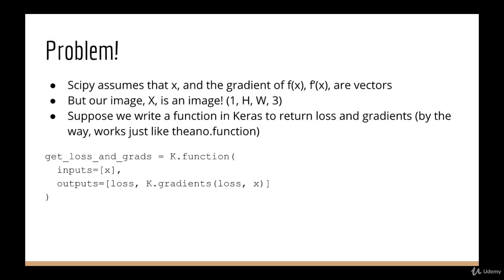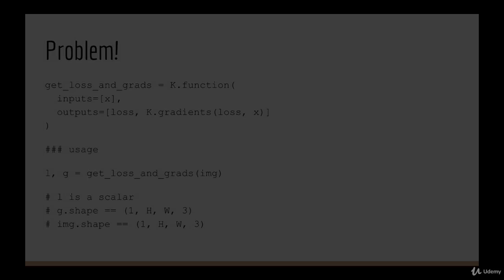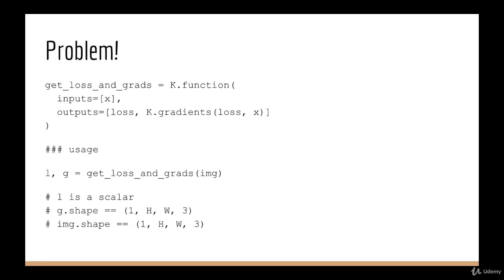Now as one last step, let's consider a problem that might not be obvious at first glance. The problem is this. All of SciPy's optimized functions assume that x, and hence the gradient f'x, are vectors. The problem is, if our x is an image, it's going to be of shape 1 by height by width by 3. So let's suppose we write some Keras function to return the loss in the gradient given x. Let's call it get loss in grads. We would call this function like this. L comma g equals get loss in grads, and we pass in the image. And the shape of image would be 1 by height by width by 3. L would be a scalar, and the shape of g would also be 1 by height by width by 3. What we want, however, is the input and the gradient to both be vectors.